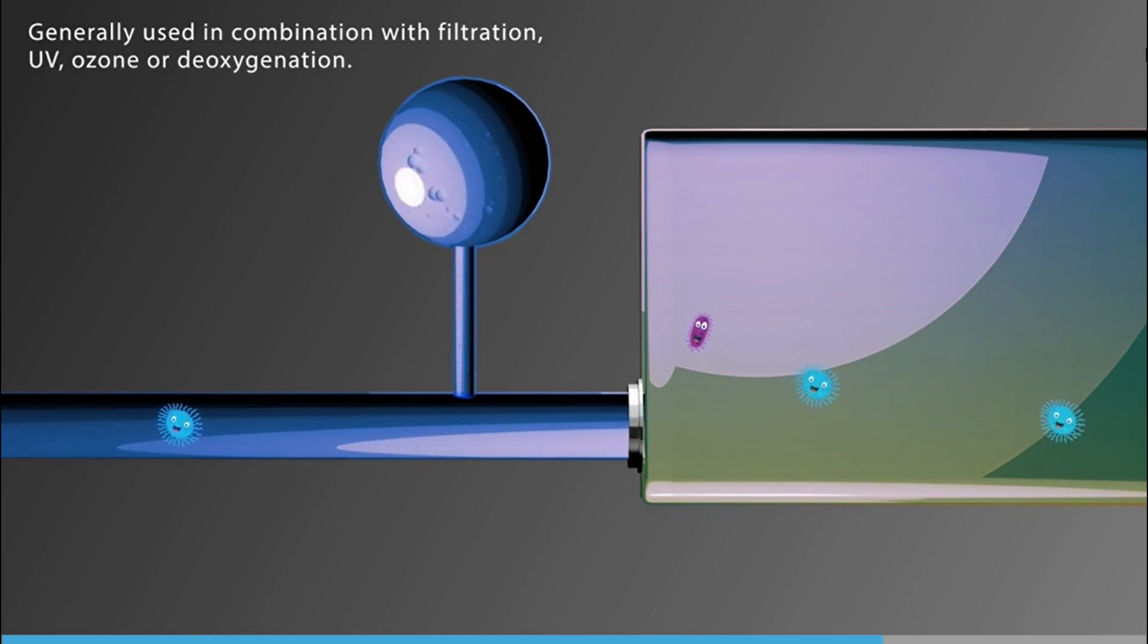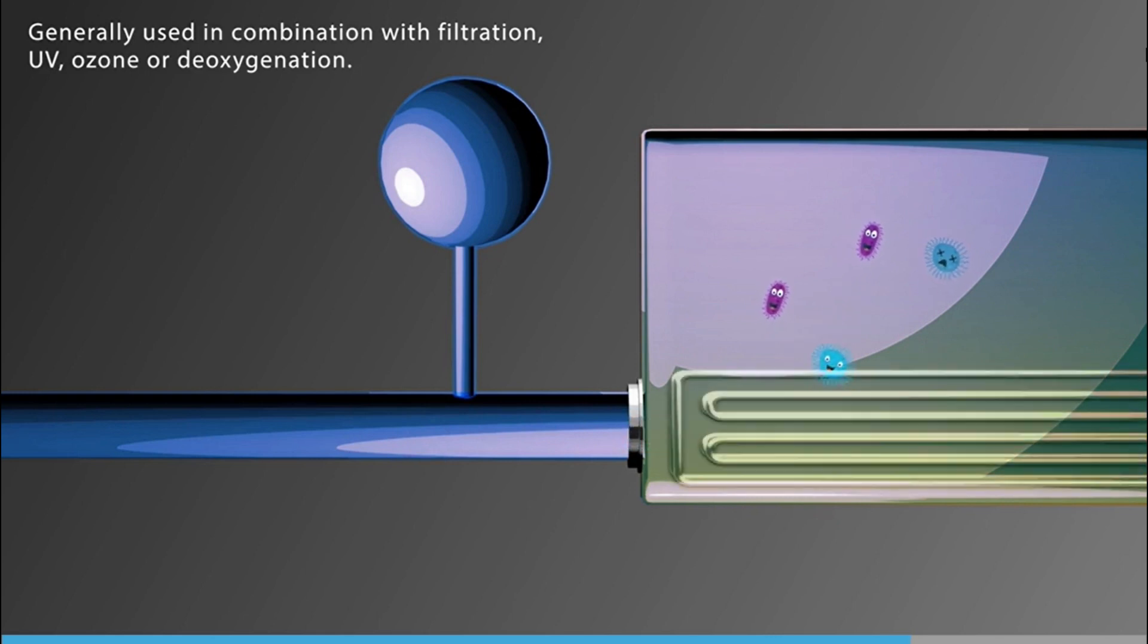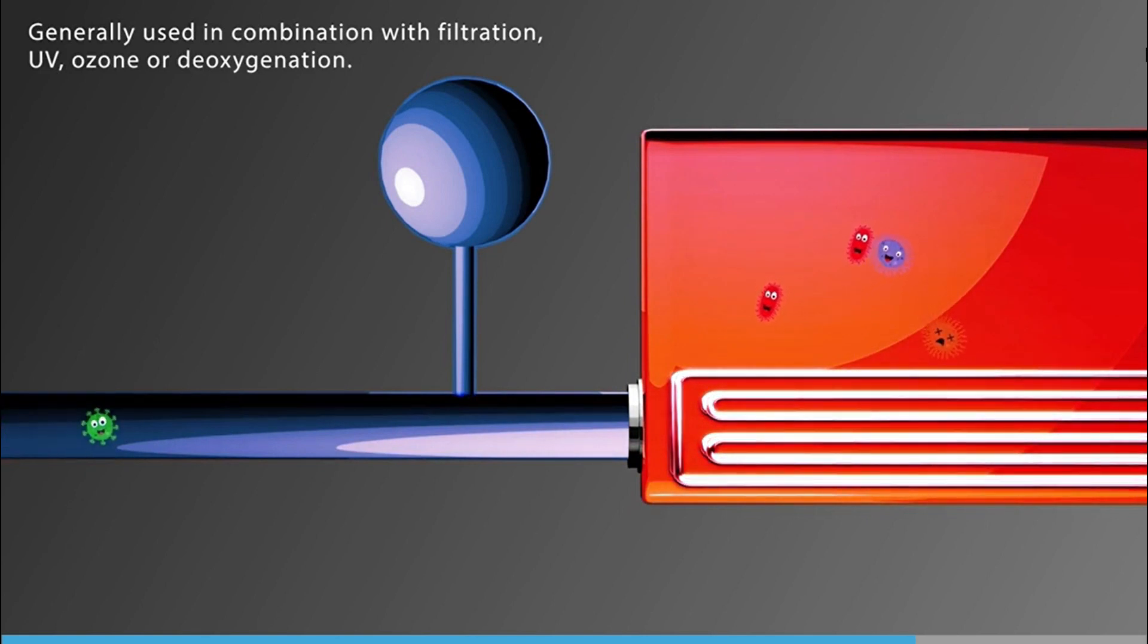If a ship is already installed with an inert gas system, then a deoxygenation system will not require more space on board ships. Deoxygenation can be used in combination with pasteurization, where the ballast water is heated to reach a temperature that will kill the organisms. A separate heating system can be used to heat the ballast water in the tanks, or the ballast water can be used to cool the ship's engine, thus disinfecting the organisms with the heat taken from the engine.